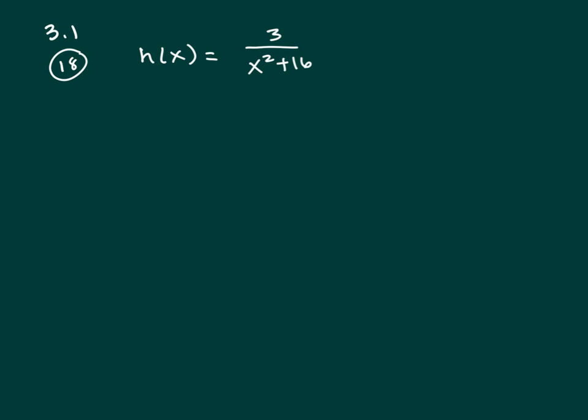We are asked to find a domain, and the domain is a set of x values that make your function valid. The only thing that gets you in trouble in terms of the x value would be if the denominator was equal to 0.